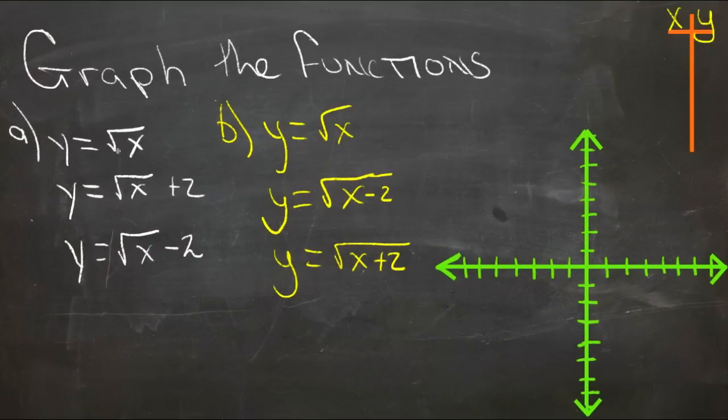I'm going to review examples a and b together. First what I'll do is just graph y equals square root of x, which is the parent function for both a and b on our graph here.